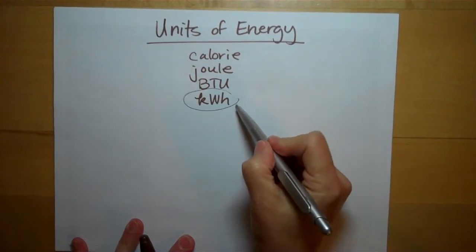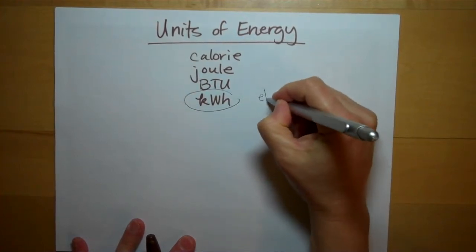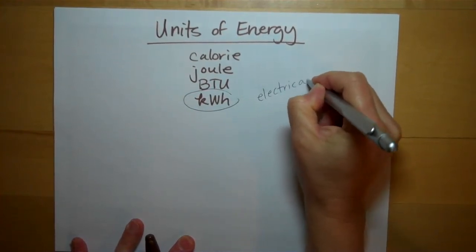And I would argue that this is probably the most important unit we're going to talk about for AP Environmental Science because it's the unit that electricity is measured in.